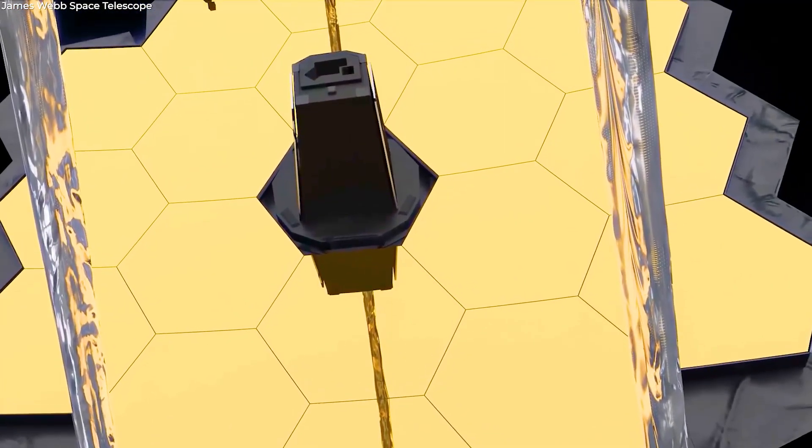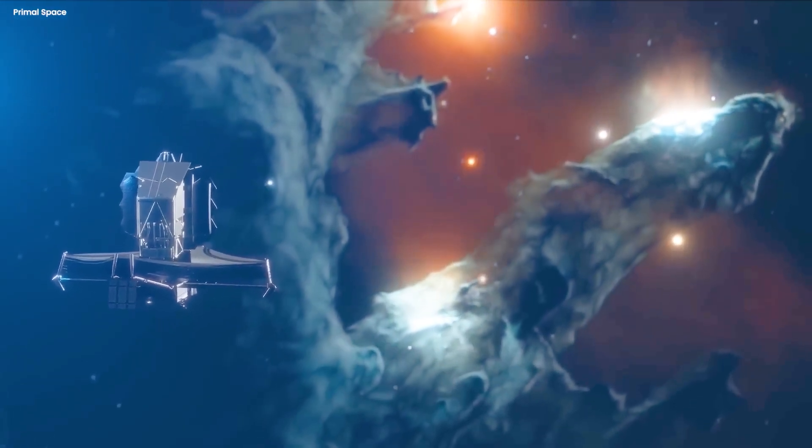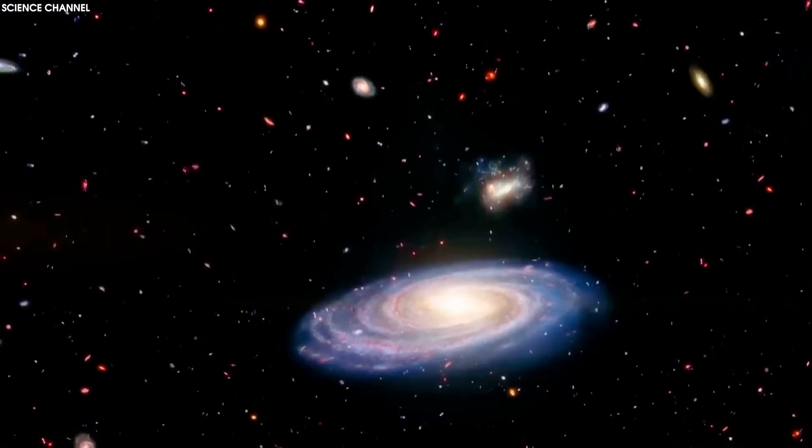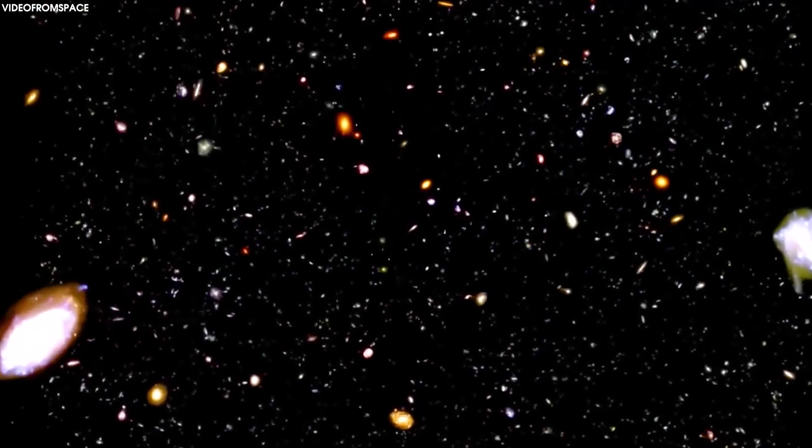James Webb Space Telescope can help fill in those details. Taking a census of the galaxies that were around during the era of reionization could help illuminate how it got started.